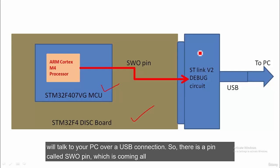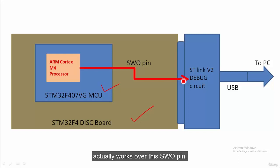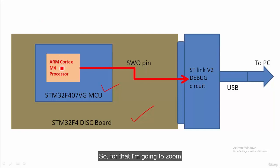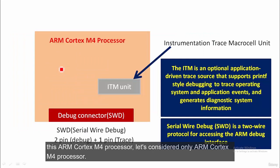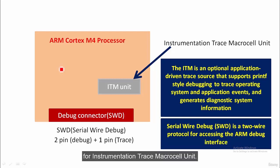The debug circuitry talks to your PC over a USB connection. There is a pin called the SWO pin coming from the ARM Cortex M processor connected to the debug circuitry. The printf function actually works over this SWO pin. Let's zoom into the ARM Cortex M4 processor. Inside it there is a unit called the ITM unit.